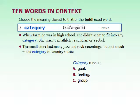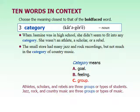Our next one is category, also a noun. Remember, a noun is a person, place, thing, or idea. 'When Jasmine was in high school, she didn't seem to fit into any category. She wasn't an athlete, a scholar, or a rebel.' 'The small store had many jazz and rock recordings, but not much in the category of country music.' Category means group — a particular type of something.